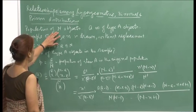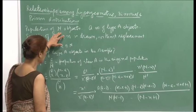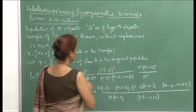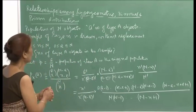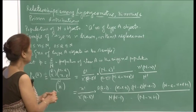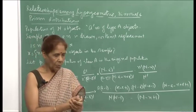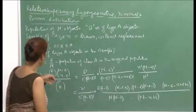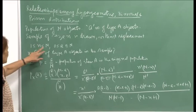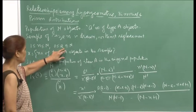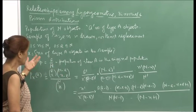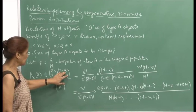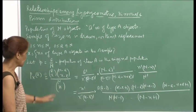The population is of N objects and a number of type A objects are in the population. The others are not type A, and a sample of size n is drawn without replacement, where n is between 1 and N and a is between 0 and N. If n minus k is bigger than the available count, by convention that term is 0 and there will be no mass.